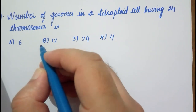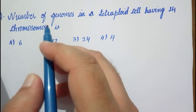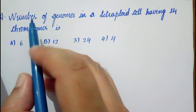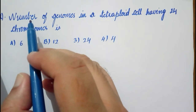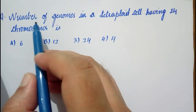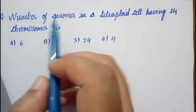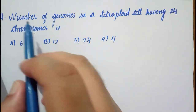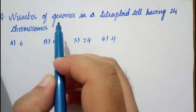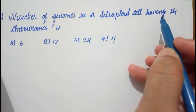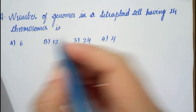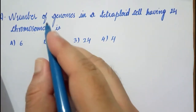Good morning students, welcome to my channel. We will see this question and the concept related to it. The question is: what is the number of genomes in a tetraploid cell having 24 chromosomes?